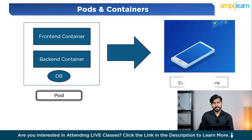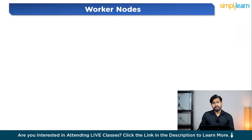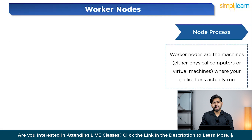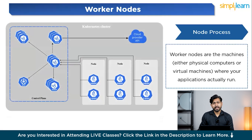Now let's understand the Kubernetes architecture. Kubernetes is an open-source platform designed to automate, deploy, scale, and manage containerized applications. It provides a powerful way to ensure that your applications are running efficiently, can scale across multiple machines, and can recover if something goes wrong. At the heart of Kubernetes architecture, there are worker nodes and master nodes. These two components work together to ensure your apps are always running smoothly. We will take a closer look at each of these components and how they interact with each other.